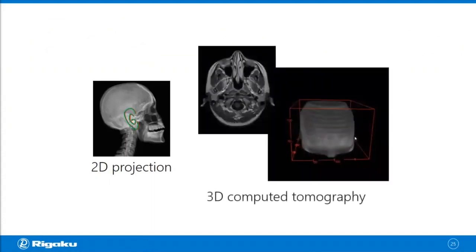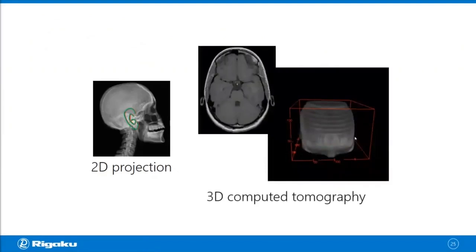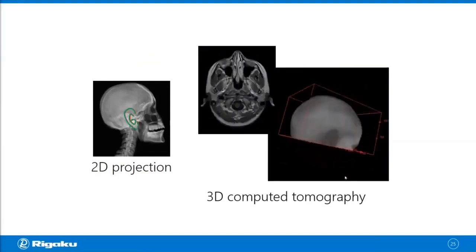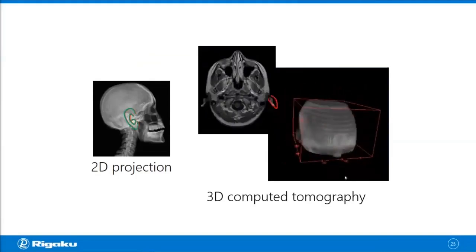Once you go to 3D, which is often called 3D computed tomography, you have multiple cross sections, and you can use those cross sections to create a 3D rendered image. And once you get to this point, you can of course tell the difference between your right ear and left ear. So that's the difference between 2D and 3D.